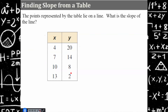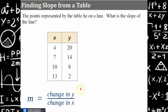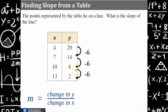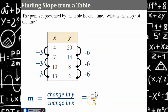We can also find slope from a table. The points in this table represent a line and we need to find the slope. We're going to use the idea of slope being the change in y all over the change in x. Y values are decreasing by six as x values are increasing by three. So our change in y, negative six, over our change in x, three, simplifies to negative two — that is our slope.